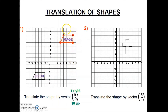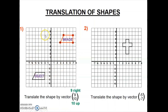The shape we finish with we can often refer to as the image. Sometimes you may think that image is only associated with reflection, but we can use that word for the shape produced after a translation as well. So I took my object and translated it to create my image. If given these two shapes and asked to describe how I got from the object to the image, I would be expected to produce this sentence: 'Translate the shape by the vector nine, ten.' I'm using the keyword 'translate' or 'translation', the keyword 'vector', and giving the correct vector.